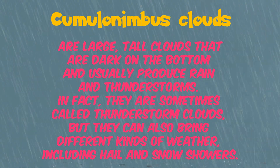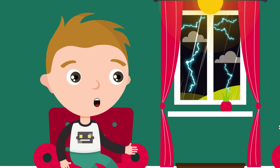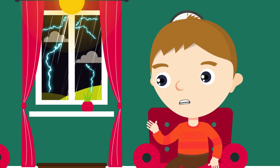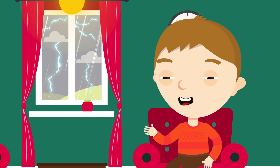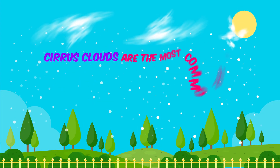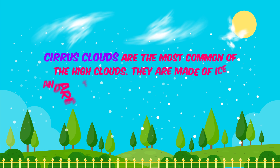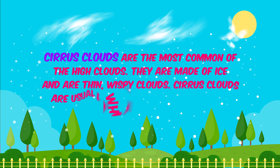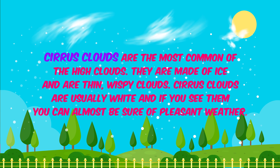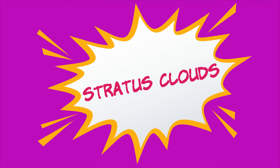In fact, they are sometimes called thunderstorm clouds, but they can also bring different types of weather like hail and snow showers. I didn't know there are different types of clouds. Yes, the three most common clouds are: cirrus clouds, which are the most common of the high clouds. They're made of ice and are thin, wispy clouds.